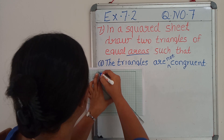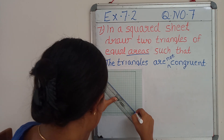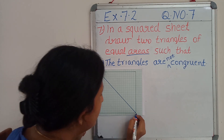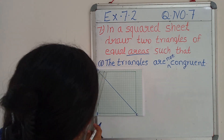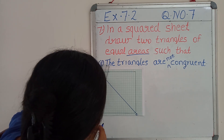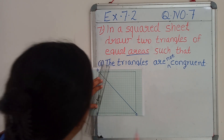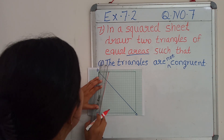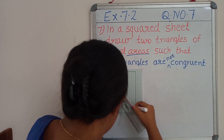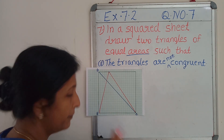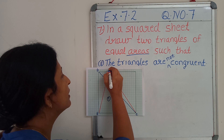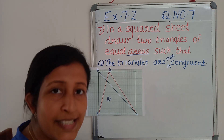I am drawing the diagonal for this square. So we got A, B, C as the first triangle. Then again I am constructing and taking a point here, and from B, I am joining to B. Now you can see triangle ABC as the first triangle and triangle BEC as the second triangle.